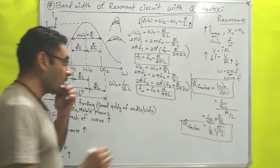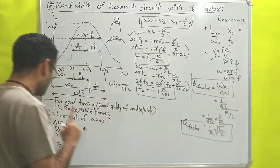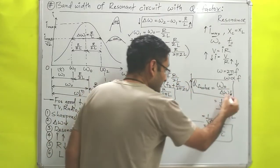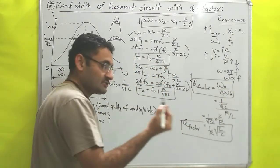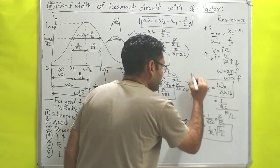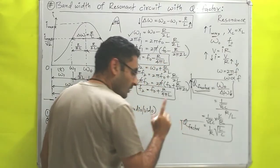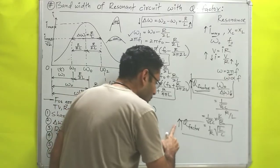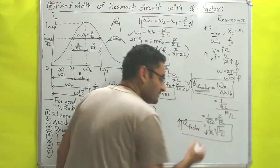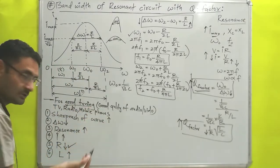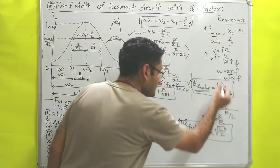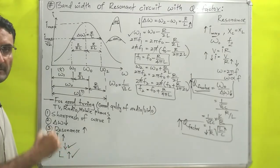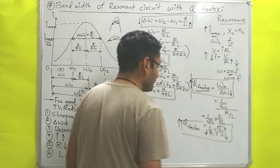For better picture quality, sharpness should be more and bandwidth should be less, which means Q factor should be high. For better tuning, keep Q factor value high. To keep Q factor high: value of R should be less — Q is inversely proportional to R. Value of inductance should be high — Q is directly proportional to L. Value of capacitance should be low — so that Q factor is high and you get good tuning.